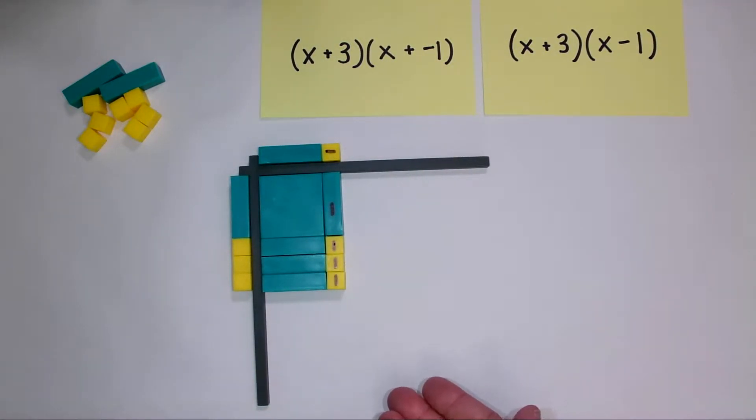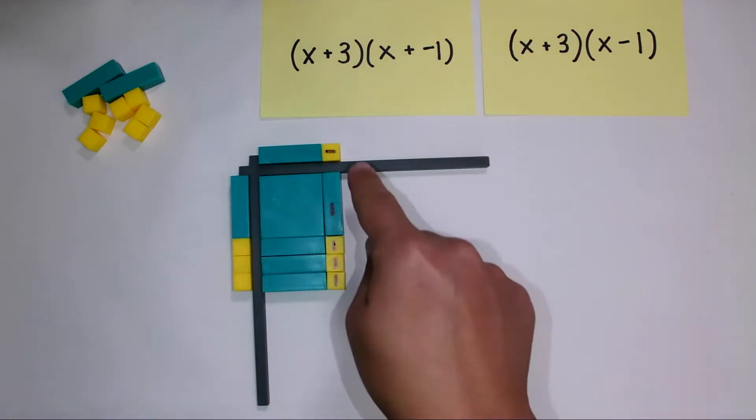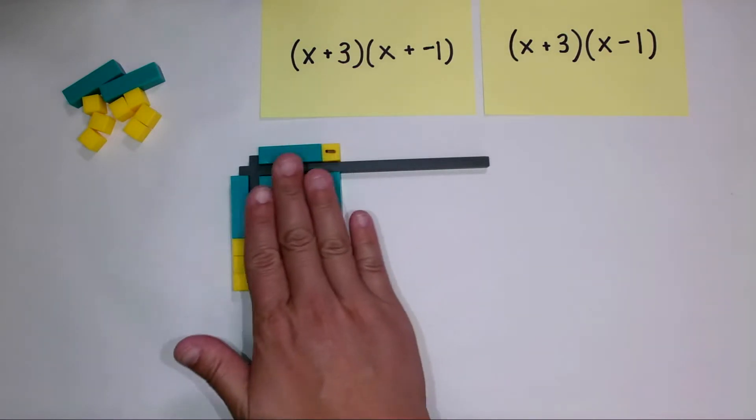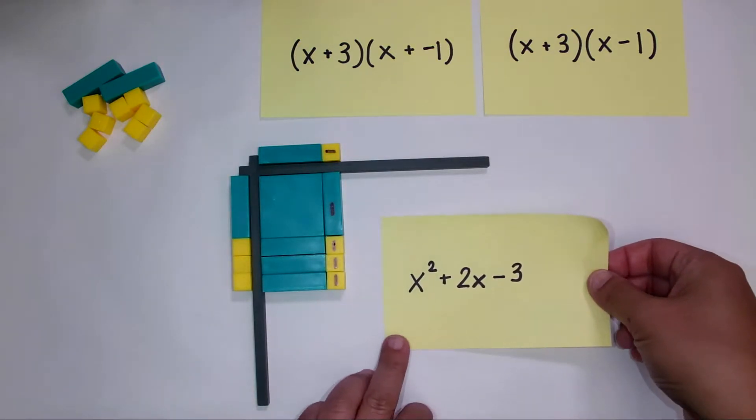Once we've created this concrete representation you can invite students to do a sketch of these very manipulatives. So they would draw their own corner piece and then they would draw out each of their manipulatives. Once students have done that you can also invite them to translate this product inside the corner piece into an abstract representation like this.